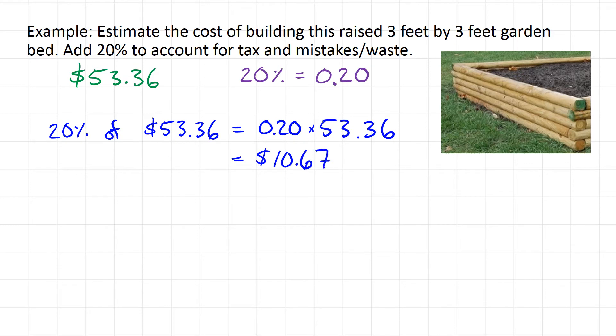So if we want to estimate, we're going to have 12% of tax here in BC, and then the fact that we might have some extra boards for waste or mistakes. We can estimate that it might cost us about an extra $10.67 beyond that $53.